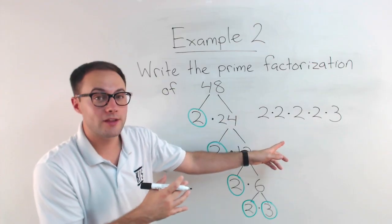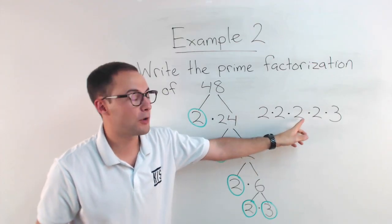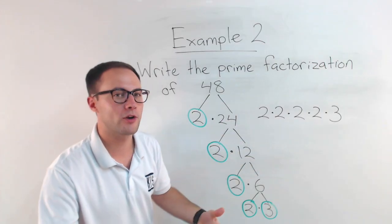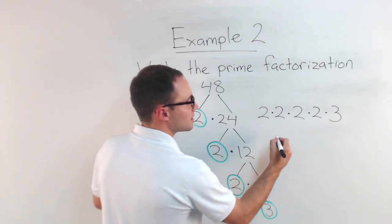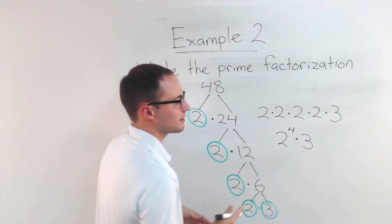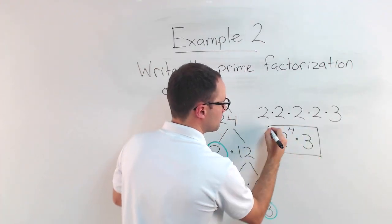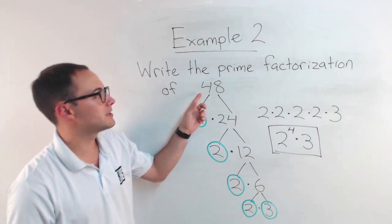Now, we can shorten this. Hopefully, you remember, if we've got repeated multiplication, instead of two times two times two times two, we can use exponents. If you remember a couple videos ago. So we can write that as two to the fourth times three. It's a little simpler. Either one is correct. This one is maybe just a little easier to read. So that is the prime factorization of 48.